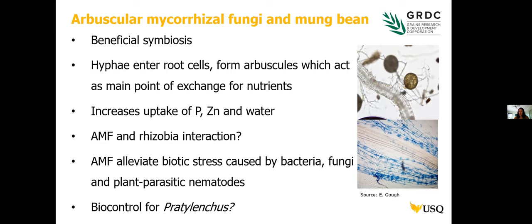In the literature, many reports have examined the interaction between AMF and rhizobia and the level of positivity of that interaction in legumes, and we wanted to research that in mungbean. Mycorrhizal fungi have also been known to alleviate biotic stress caused by pathogens and plant parasitic nematodes, though there's some controversy — sometimes AMF decreases nematode population densities and sometimes it increases them. We wanted to know what the interaction was with Pradylenchus root lesion nematodes and whether AMF could be used as a biocontrol agent.